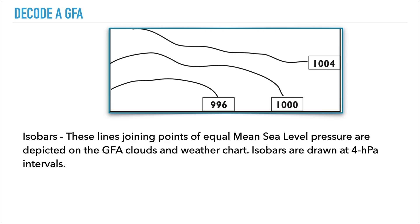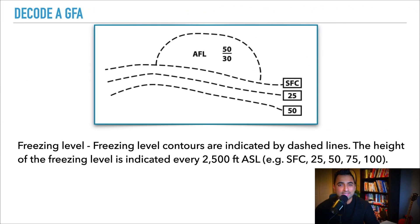In the next part we'll look at lines of equal pressure known as isobars. These lines join points of equal mean sea level pressure and are depicted on the GFA clouds and weather chart only. Isobars are drawn at four hectopascal intervals.